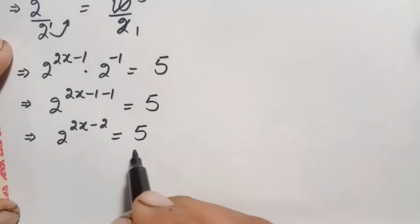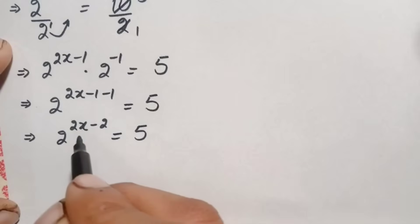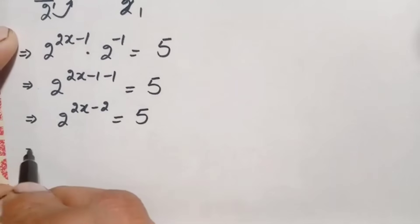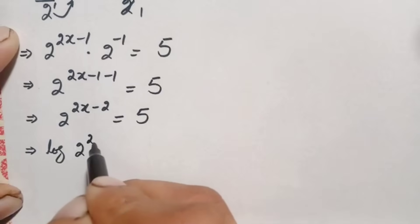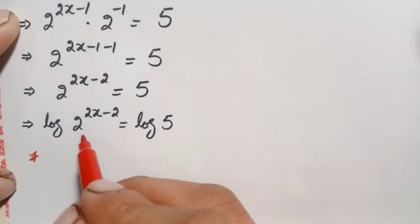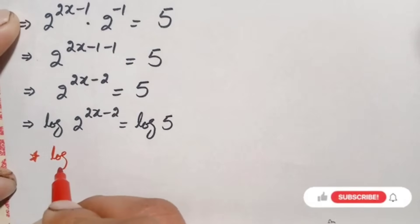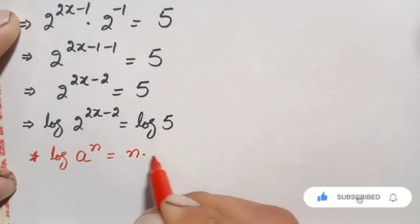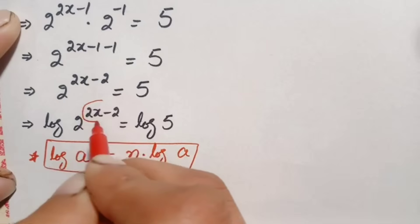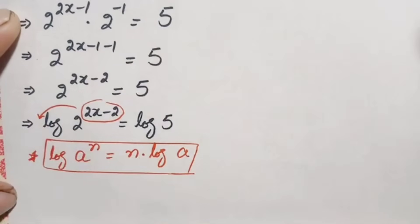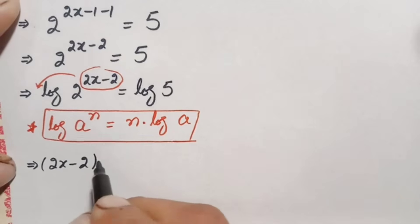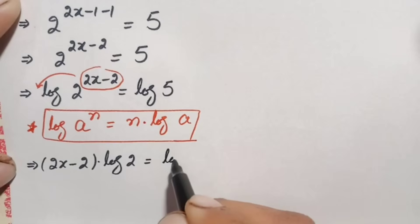To find the value of x when the variable is in the power, we use logarithms. Taking the common log on both sides gives log of 2 raised to power 2x minus 2 is equal to log of 5. On the left hand side, we use the logarithm result: log of a raised to power n equals n times log of a. So moving the power 2x minus 2 to the front, this equation becomes 2x minus 2 times log of 2 is equal to log of 5.